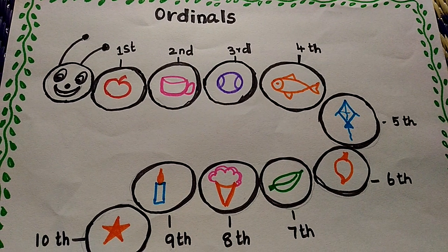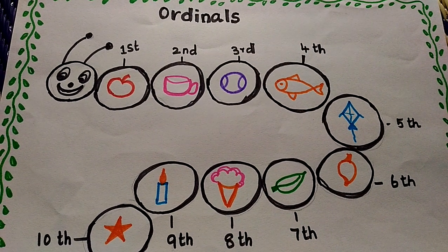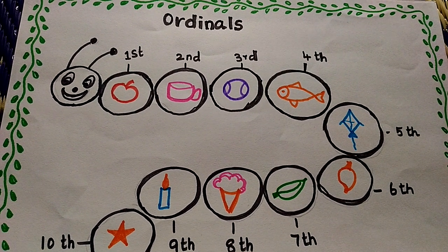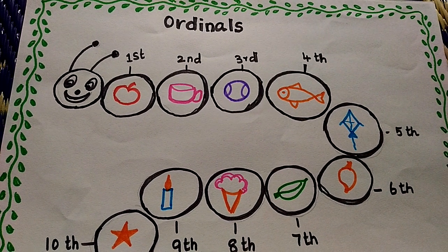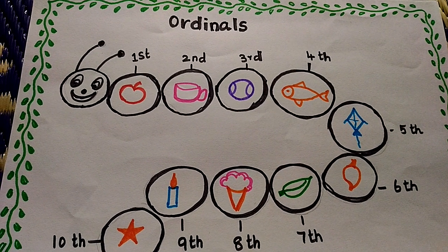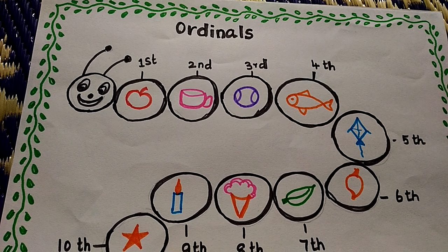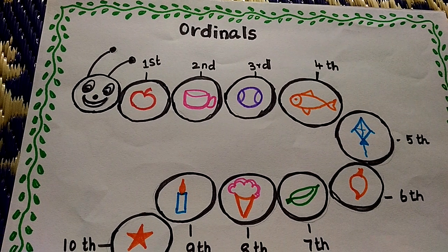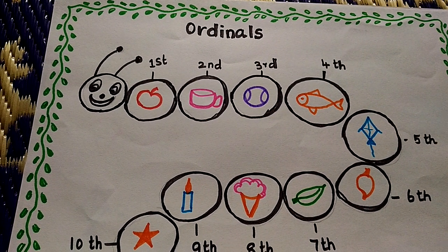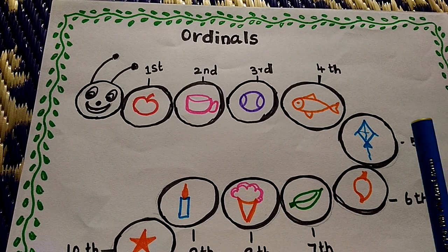Hi kids. Max worksheet for UKG kids. Ordinals. Ordinals means tells the position of something in your list or series, such as first, second, third.